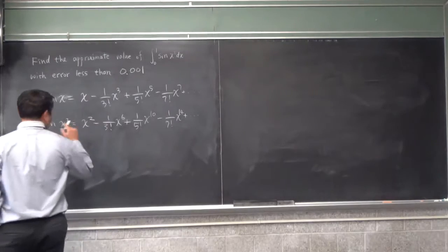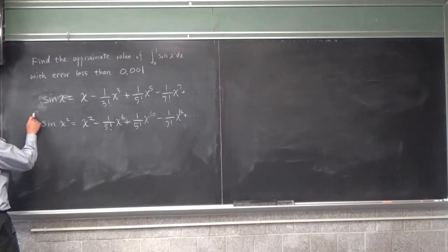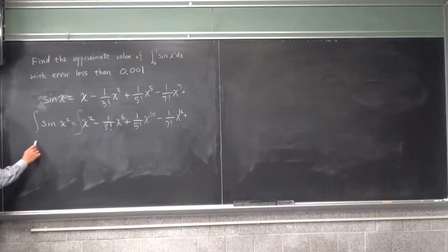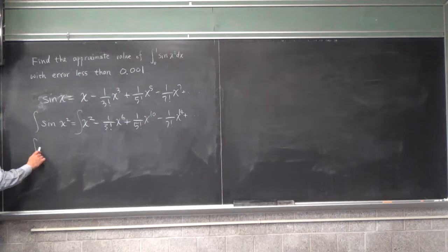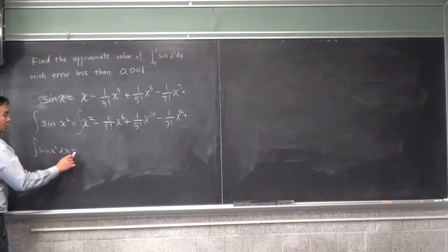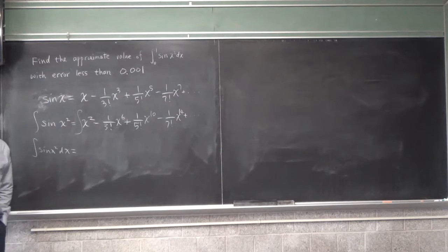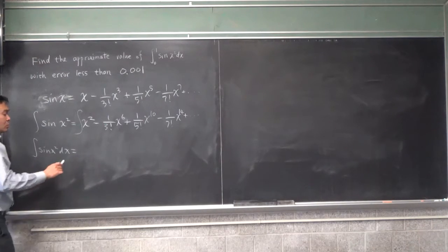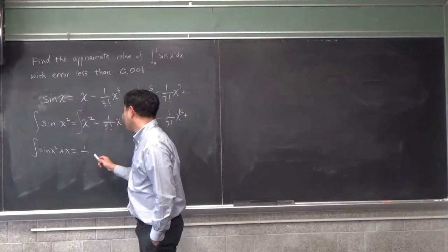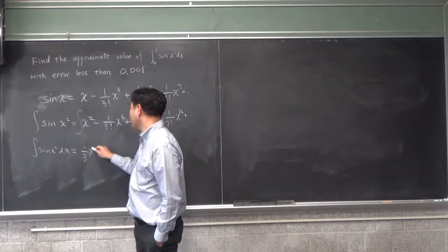And therefore, if these two sides are the same, we can integrate both sides, and the result is that you have the integral of sin(x²) dx equal to... Well, x² integrates to what? 1 over 3 x³.